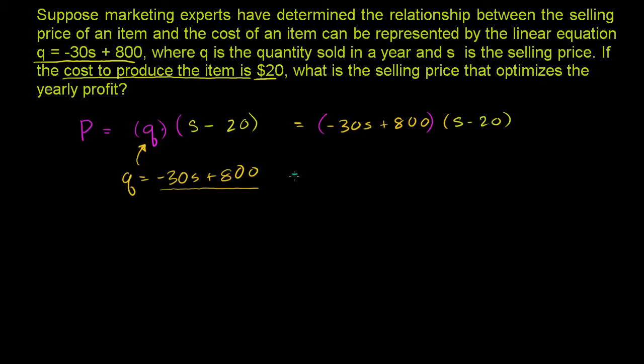So this is going to be equal to negative 30S. So let me just distribute it out. This is going to be negative 30S times S minus 20, times this whole thing. We're taking this whole term. We're first multiplying it times negative 30S. And then we're going to take this whole term and then multiply it by 800.